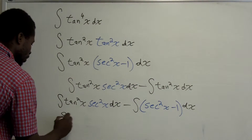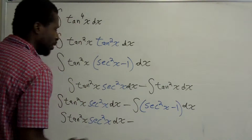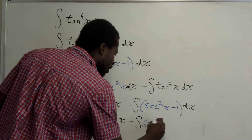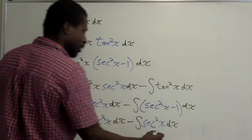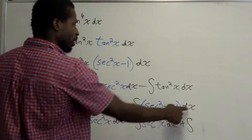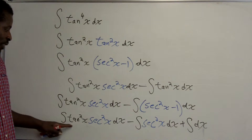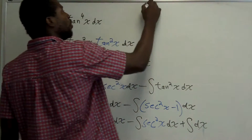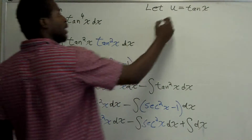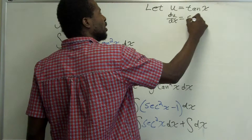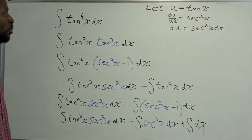Now I get three integrals: the integral of tangent squared of x times secant squared of x dx, minus the integral of secant squared of x dx, and then plus the integral of dx (because it's a negative times a negative). Now I'm ready for my u-substitution. I'm going to let u equal the tangent of x, so du/dx equals secant squared of x, which means du equals secant squared of x dx.